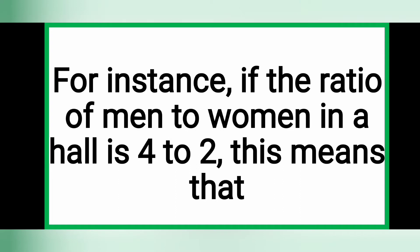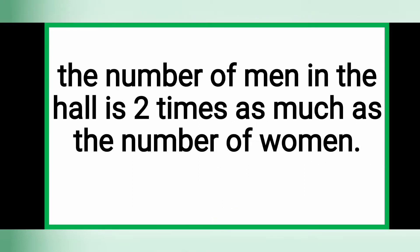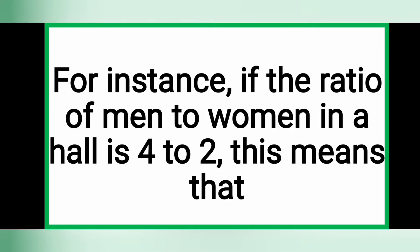For instance, if we have some men and women in a group, and the ratio of men to women is 4 to 2, that means the number of men is 2 times as much as the number of women. So the ratio 4 to 2, in its lowest terms, is 2 to 1. Now let's solve some examples on ratios.